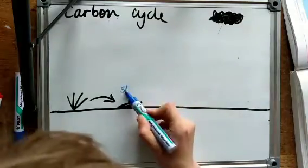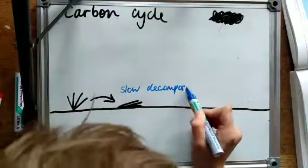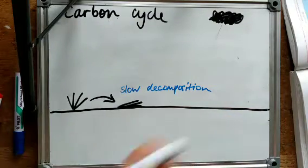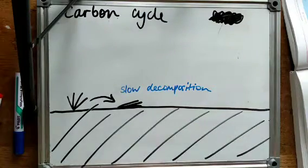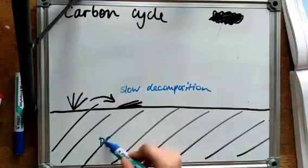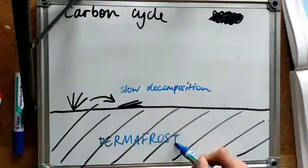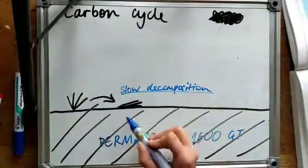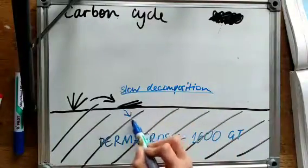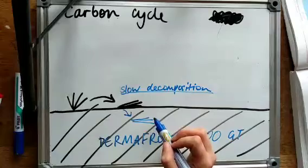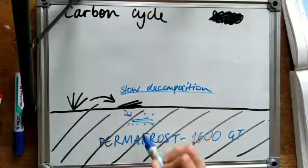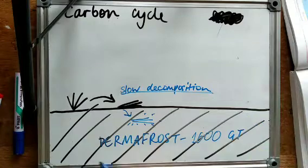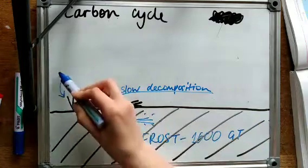So there's very slow decomposition in the tundra because the temperatures are low. So microorganisms can't decompose things as fast. So a large store of carbon is in the permafrost, 1,600 gigatons globally, which is quite a lot. This is because of the slow decomposition. So plants die, they're frozen rather than decomposing and decomposing would release the CO2 to the atmosphere, but it doesn't.